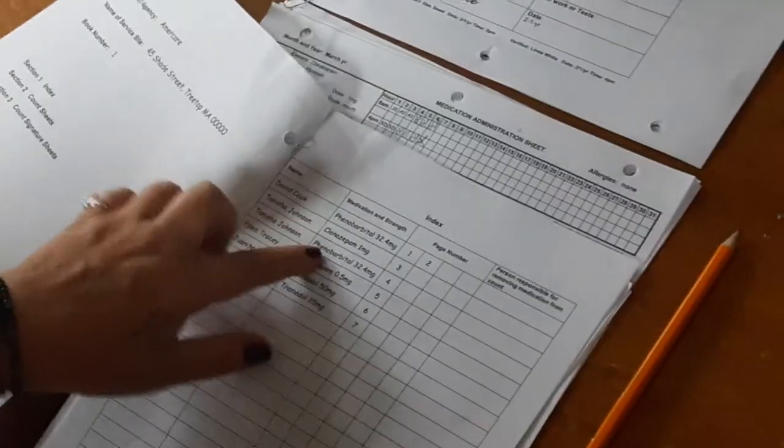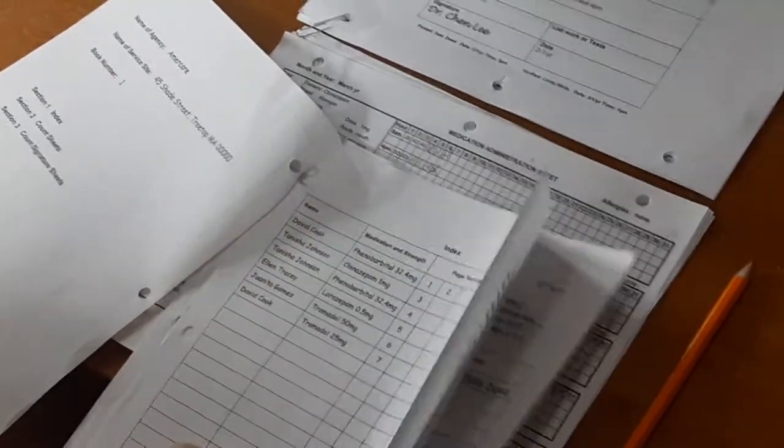So I'm going to find Tanisha Johnson in the count book. Tanisha Johnson, clonazepam, 1 milligram, on page 3. Turn to page 3. I'll set that aside.